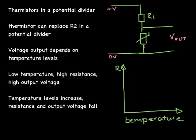So when it's cold and the temperature levels are low you have a very high resistance, and this means that the output voltage is also very high and you could use it to switch on a heater. Then as the temperature levels increase the resistance falls, and so does the output voltage, again until you get to the level where the heater would then be switched off.